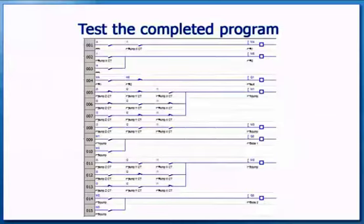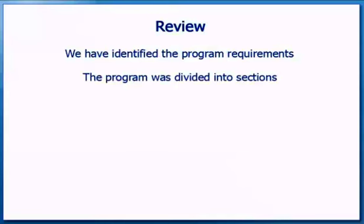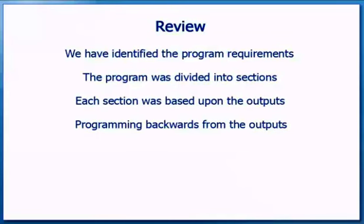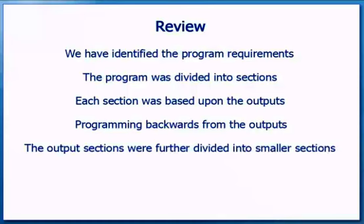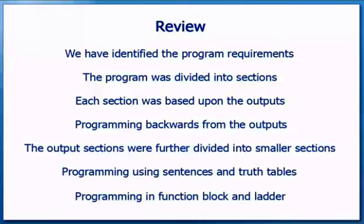The final part is to combine all the outputs into the program and test that it works as expected. Refer to the workbook for the final program. Convert the program to function block and test. We have identified the specifications, divided the program into sections based on the outputs, and created internal relays for each sub-condition. Programming was done using truth tables and sentences, using both function block and ladder diagram approaches.